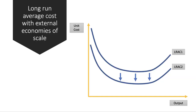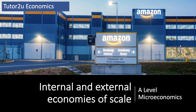With an external economy of scale, there is the potential to bring down the unit cost for all firms independent of their output. One way you would show external economies of scale on a diagram is by a downward shift in the long-run average cost curve.